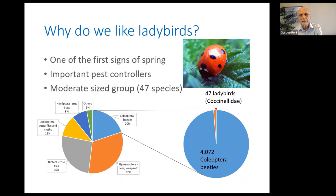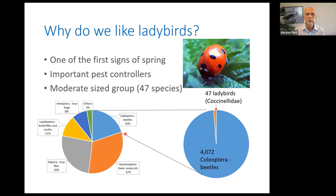It is also true that they're a nice, easy group to get to grips with. There are so many insects in the world that it can be bewildering to work out the different sorts and to learn the names of different species. But ladybirds are a nice manageable group. The pie chart here shows the size of the different orders of insects in the British Isles: beetles (Coleoptera) represent about 20%, bees, wasps and ants 32%, true flies 26%, butterflies and moths 11%, with smaller orders making up the rest.